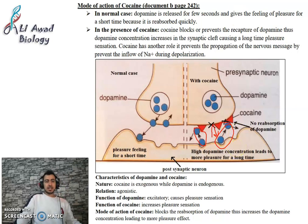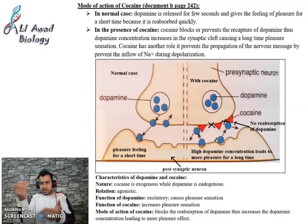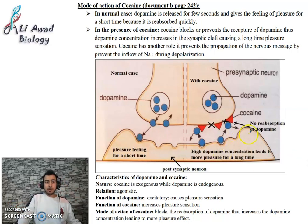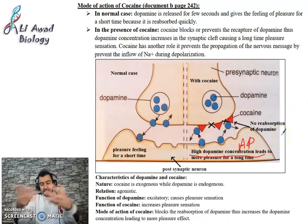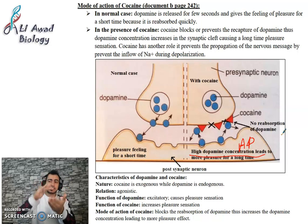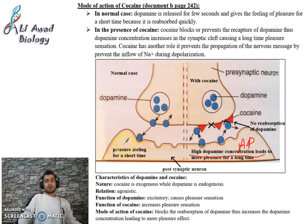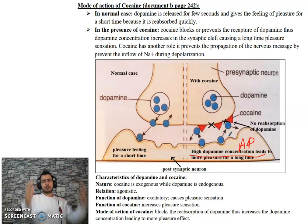Because the recapture pump is blocked, the concentration of dopamine increases in the synaptic cleft. When the concentration of the neurotransmitter increases, there is more binding to the receptors for a longer period of time, generating more action potentials — more pleasure sensation. Cocaine is an exogenous substance, so it takes time to be degraded. During all that time, dopamine continues exocytosis and its concentration keeps increasing.